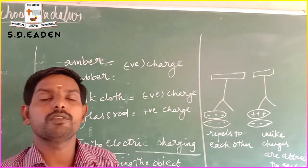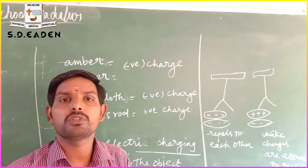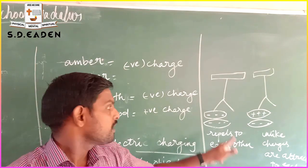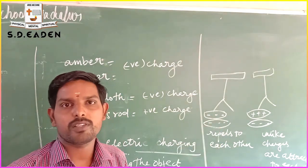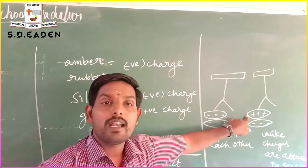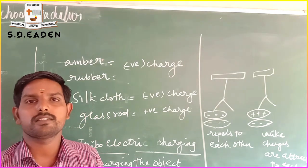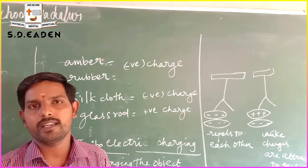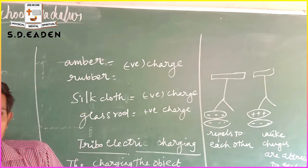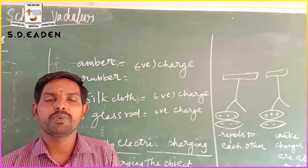From this, we conclude that the charged rubber rod and charged glass rod are different from each other. Like charges — negative and negative, or positive and positive — repel each other. Unlike charges — positive and negative — attract each other. The scientist Benjamin Franklin, in the 18th century, concluded that in the universe there are only two types of charges: positive and negative, and the overall net charge is always zero.